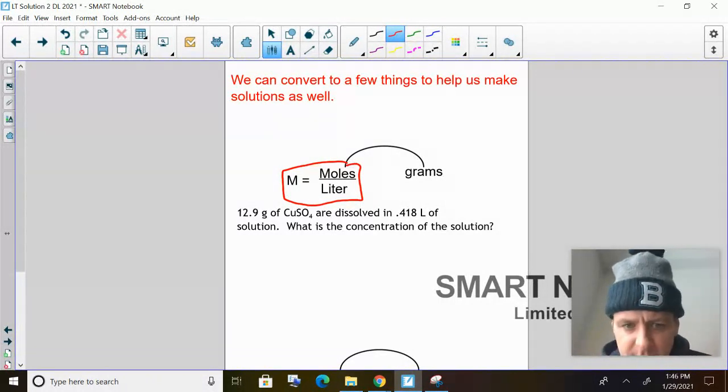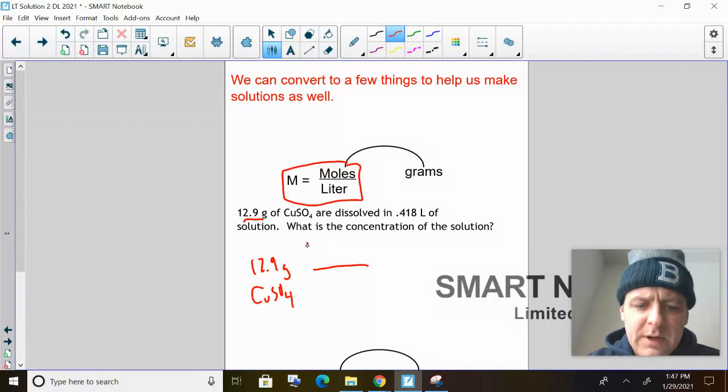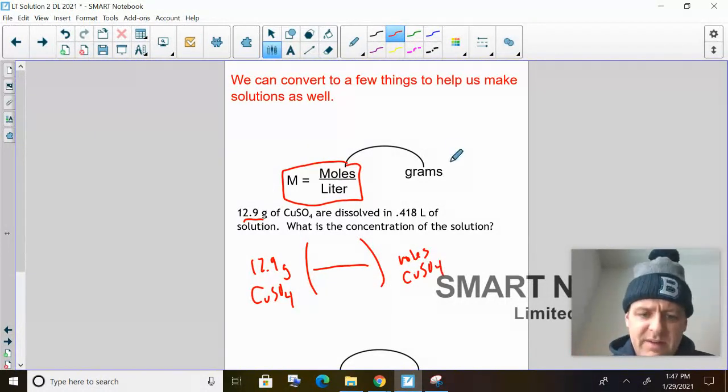So if I'm given a problem where I say you got 12.9 grams of copper sulfate, well, we can do a simple molar mass conversion to figure out how many moles of copper sulfate that is. So if I'm given 12.9 grams of CuSO4, I have to convert it to moles to be able to use the equation.